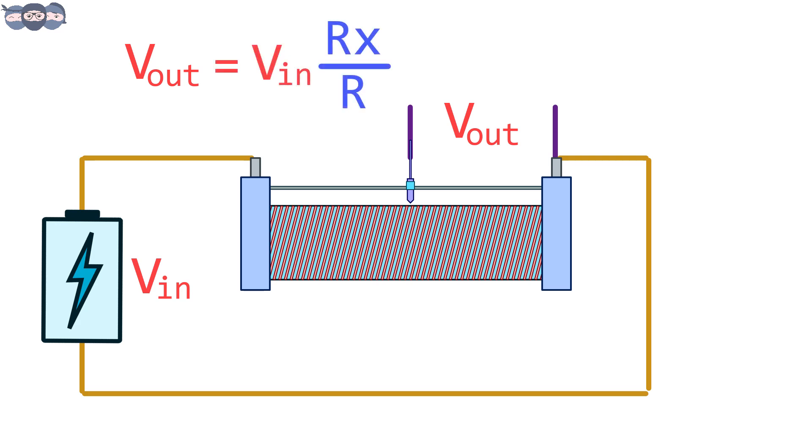The ratio of Vout to Vin is Rx to R. From the previous ratio, Vout to Vin can be equated to Lx to L. Thus, the output voltage is proportional to the distance travelled.